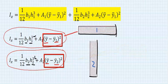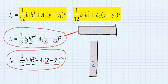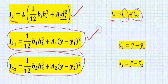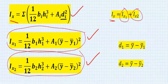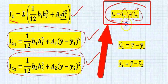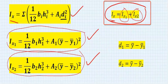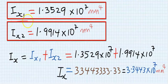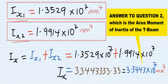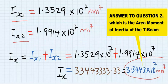It doesn't matter which centroid value is bigger — the square term will always take care of any negative. Now that we have obtained the area moment of inertia for the first rectangle and for the second rectangle, we sum both results to obtain the total area moment of inertia for the T-beam.